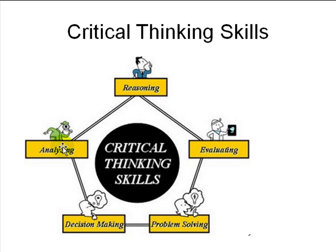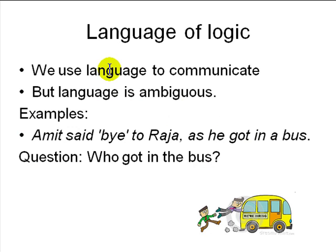For thinking, you need a language, and we use language to communicate. But language is ambiguous. For example: 'Amit said bye to Raja as he got into a bus' — who got into a bus, Amit or Raja? It's understood from context, but it can be ambiguous. We try to make language as precise as possible to avoid ambiguity.